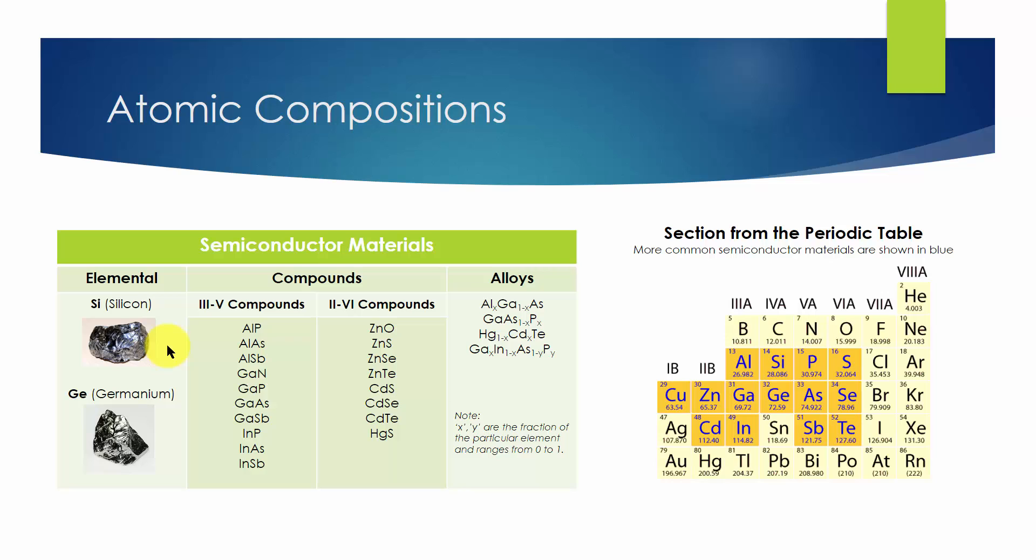The vast majority of integrated circuits and most devices are made with silicon. The compounds are a combination of group 3 and group 5, called 3-5 semiconductors, or a combination from group 2 and group 6, called 2-6 semiconductors.